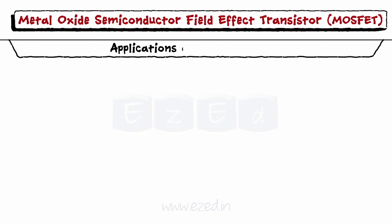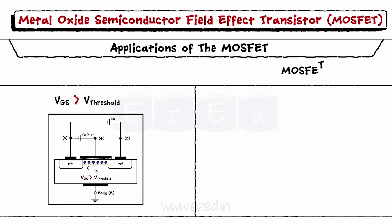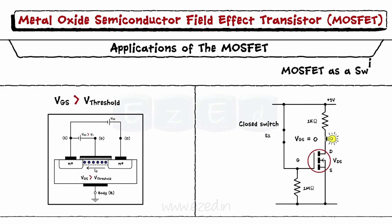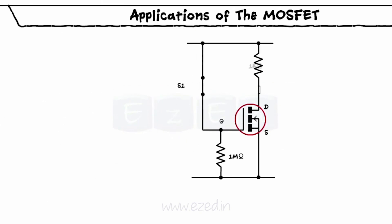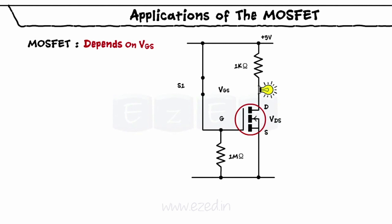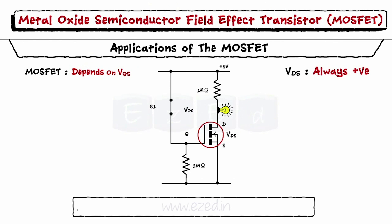Now let's focus on the applications of the MOSFET. Same as the BJT, MOSFET can also be used as a switch. This operation of the MOSFET solely depends upon the VGS voltage, provided voltage VDS between the drain and the source is positive. Hence MOSFET is called a voltage controlled current source.